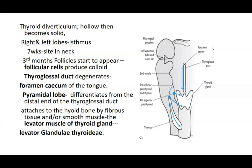An extension of the thyroid gland may form in the center — the pyramidal lobe — differentiating from the lower end of the thyroglossal duct. The pyramidal lobe is attached above to the hyoid bone and below to the thyroid gland by a muscular or fibrous strip called the levator glandulae thyroideae. This muscle produces elevation, so when the hyoid bone moves on swallowing, the thyroid moves with it.